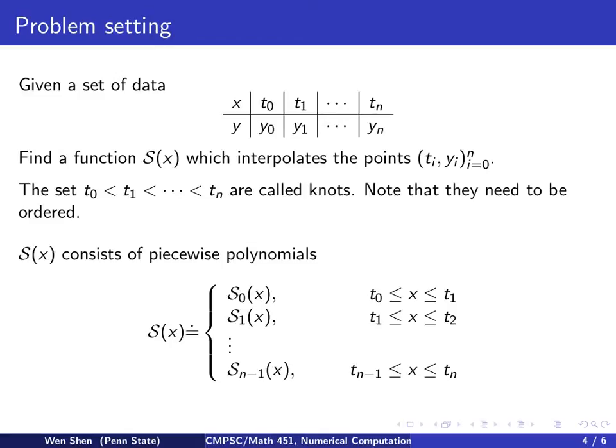The spline function S(x) consists of piecewise polynomials, where on each interval from tᵢ to tᵢ₊₁, we denote a polynomial Sᵢ. On the first interval with index 0, we get S₀, on the second interval S₁, and so on, until the last interval with Sₙ₋₁.